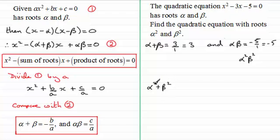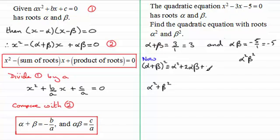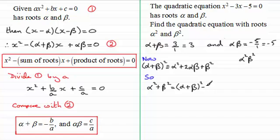To get α² + β² we use the identity: (α + β)² = α² + 2αβ + β². Rearranging, α² + β² = (α + β)² − 2αβ.